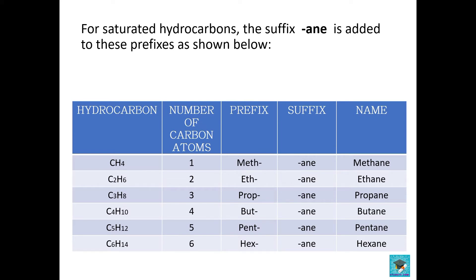In this table we can see the different numbers of carbon atoms, the prefixes, plus the suffix used, and finally we get the name. For saturated hydrocarbons the suffix '-ane' is used. So if the carbon number is one, prefix 'meth' plus suffix '-ane' gives methane. Two carbon atoms: 'eth' plus '-ane' is ethane. Three carbon atoms: 'prop' plus '-ane' gives propane, and so on.